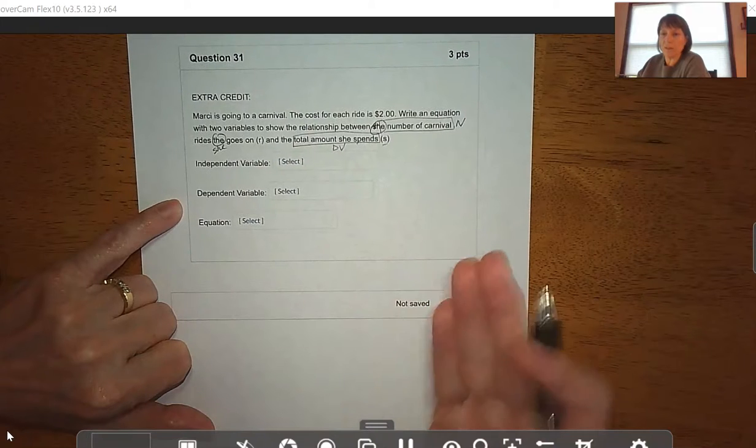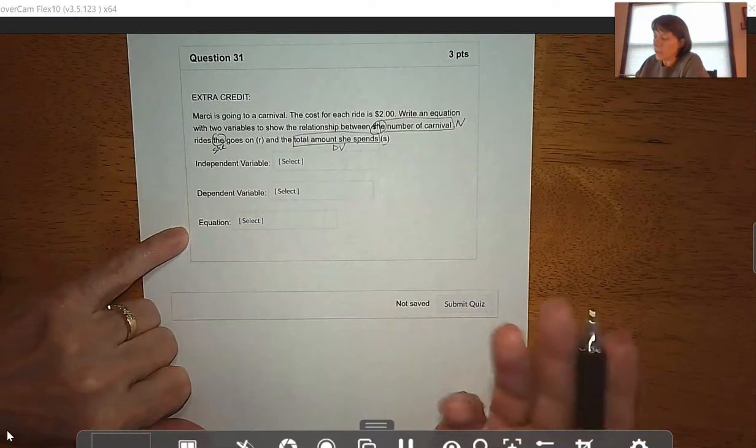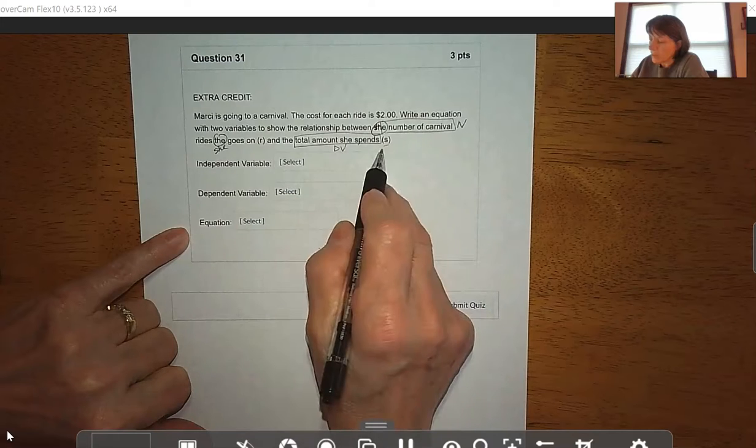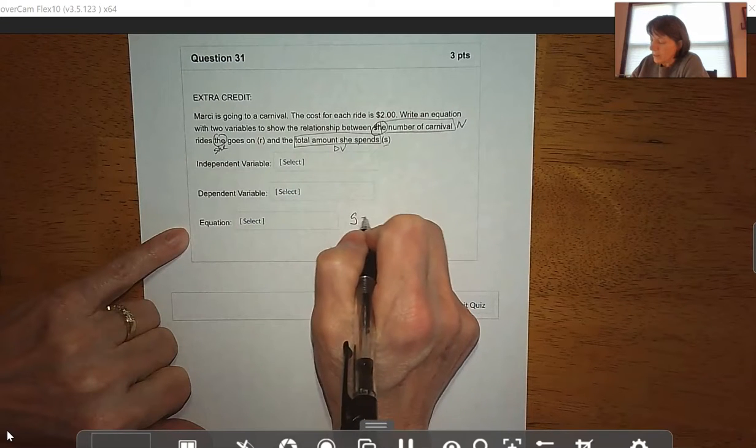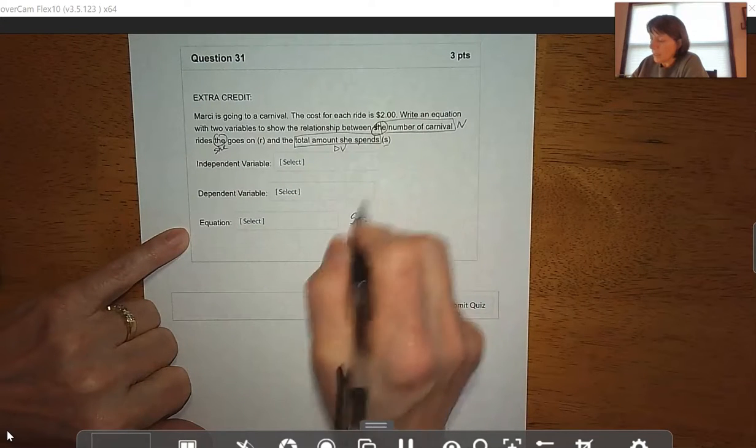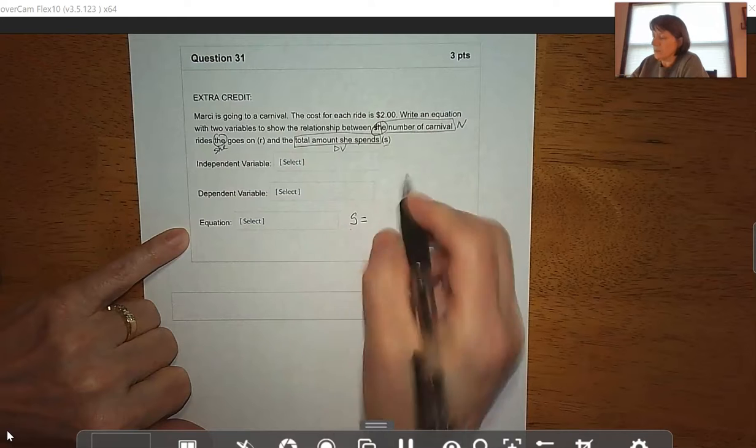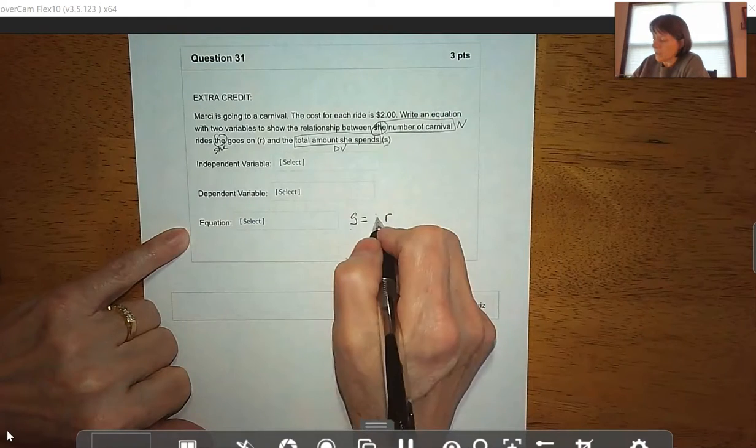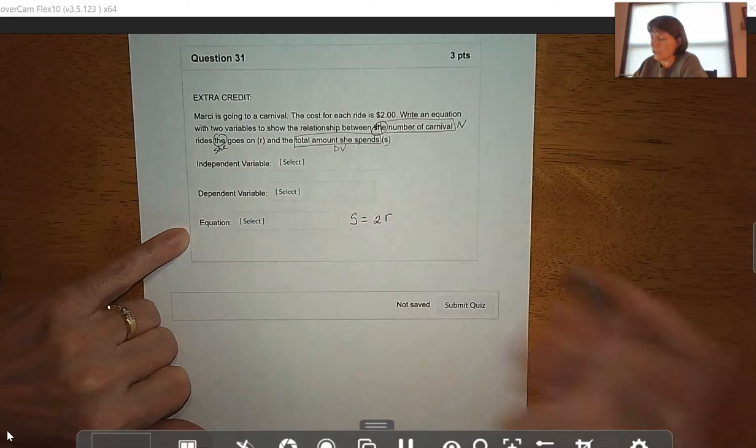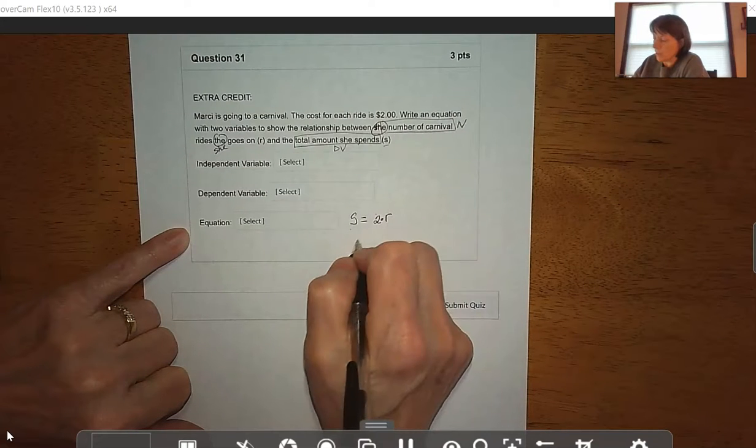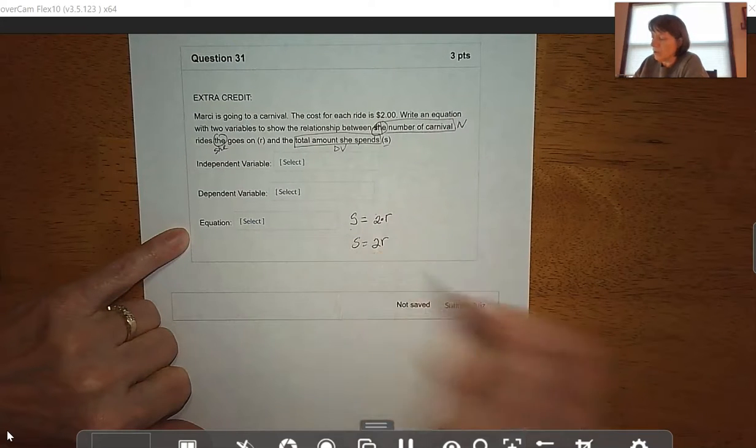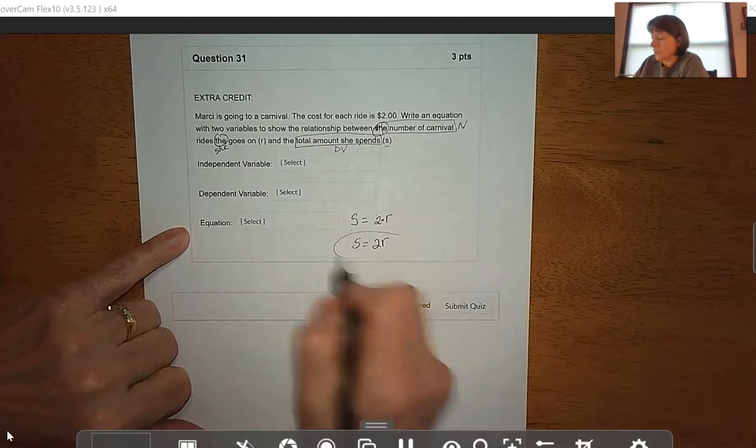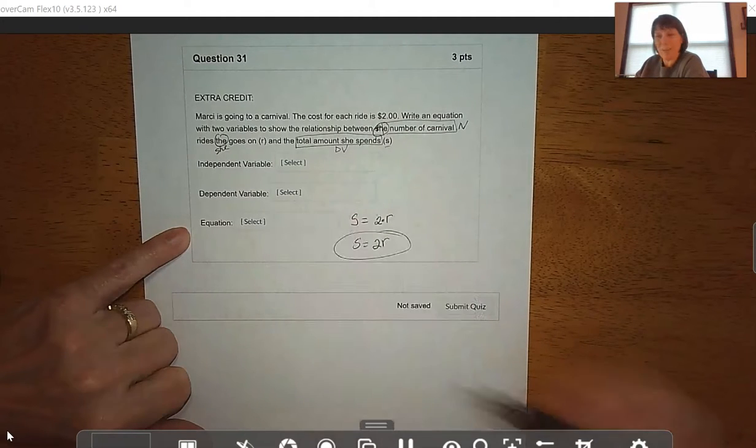Now the equation - these are tough. We want the total amount she spends for S, and that's going to depend on the number of rides she goes on. But remember, each ride costs $2, so we have to multiply 2 times R. You can write that as S equals 2R, or you can use a multiplication symbol.